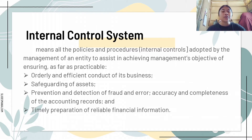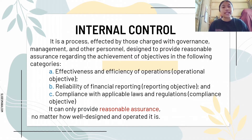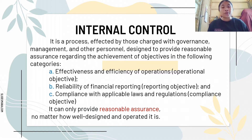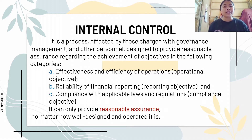Under this internal control system is what we call internal control. According to Asuncion, Yena, and Scala, internal control is a process affected by those charged with governance, management, and other personnel, designed to provide reasonable assurance regarding the achievement of objectives in the following categories: first, the effectiveness and efficiency of operations, which is the operational objective; second, the reliability of financial reporting or the reporting objective; and lastly, the compliance with applicable laws and regulations, known as the compliance objective.